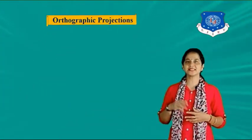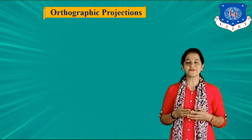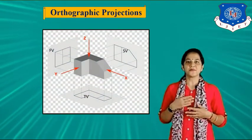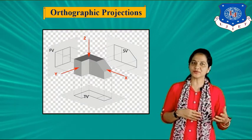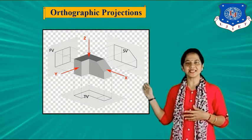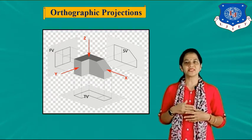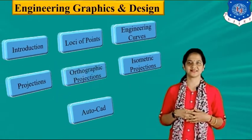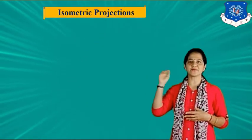Next topic is orthographic projection. Orthographic projection means multi-view representation of the given 3D object. Here you can see the front view, top view and side view of the given 3D object.